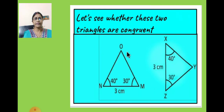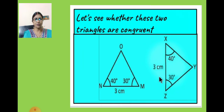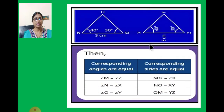Now this is another example. We will check whether these two triangles are congruent. This is one triangle and this is another triangle. We will rotate the first triangle and place it in this position. Now we have the two triangles to compare and we will see whether they are congruent or not.